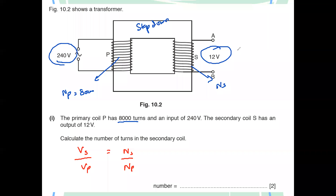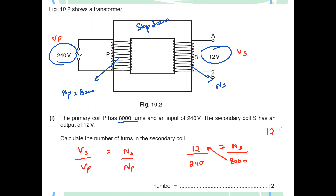Substituting: voltage of secondary is 12, voltage of primary is 240, number of turns of primary is 8,000. Rearranging: NS equals 12 multiplied by 8,000 divided by 240, which equals 400. So the secondary coil will have 400 turns.